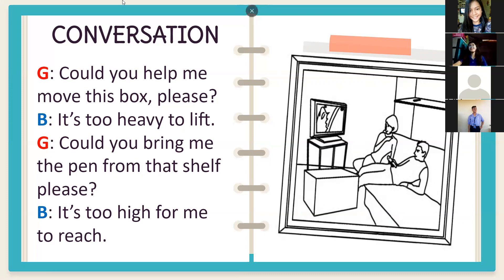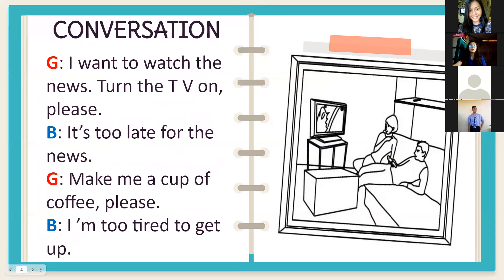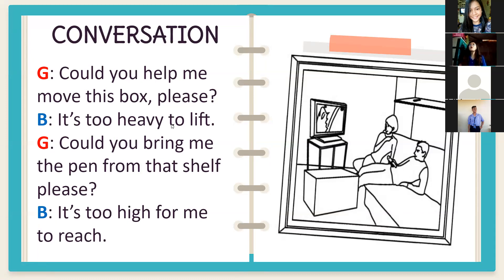In this conversation, the girl is asking the boy to help her move the box. The boy answered: 'It's too heavy to lift.' In this sentence, we can see the word 'too' — too plus heavy, and heavy is an adjective, so that's 'too' plus adjective. Similarly, 'it's too high for me to reach' — again, 'too' plus adjective, which is 'high'.